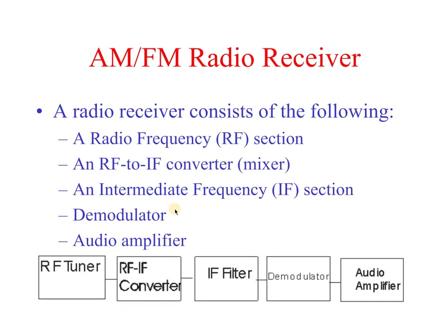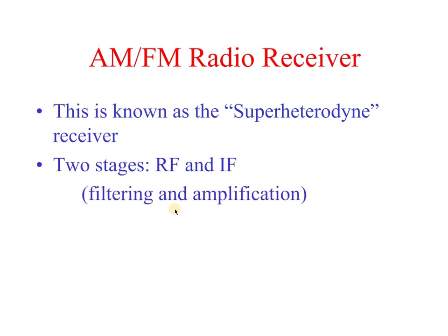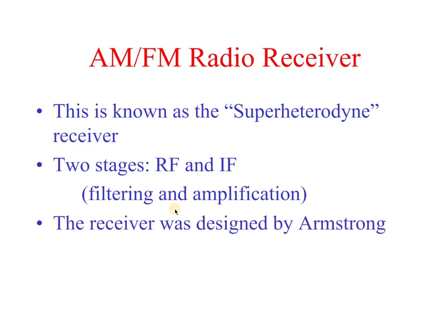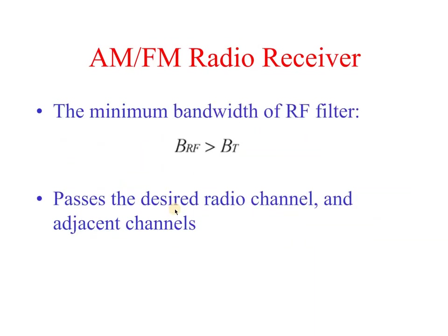A radio receiver consists of the following sections in the block diagram: an RF section, an RF-to-IF converter (mixer), an intermediate frequency section, and a demodulator with audio amplifier. This is known as a superheterodyne receiver, consisting of RF and IF sections. The RF section is for filtering and the IF section is for amplification. This receiver was designed by the Armstrong method.